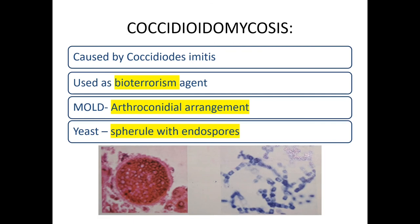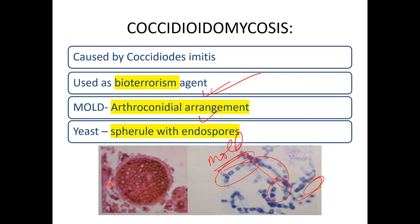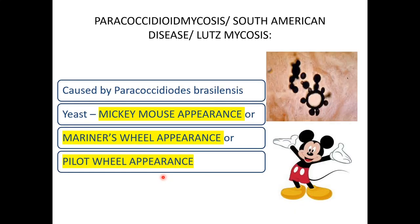Coccidioidomycosis is caused by Coccidioides immitis and is used as a bioterrorism agent. In the mold form it shows arthroconidial arrangement. In the yeast form, spherules with endospores are seen — this is coccidioidomycosis.